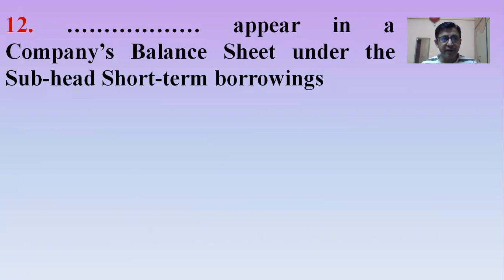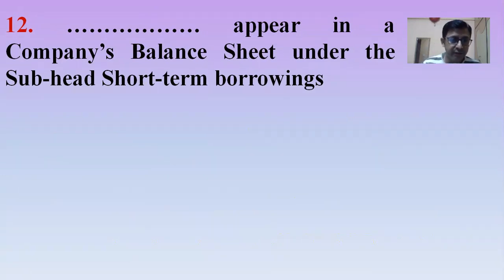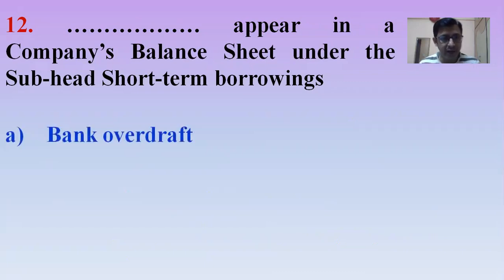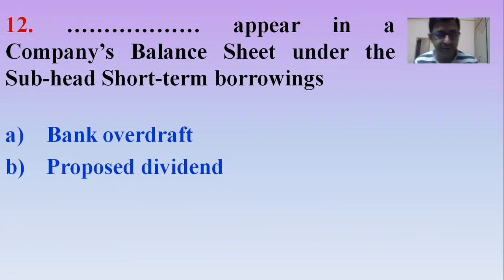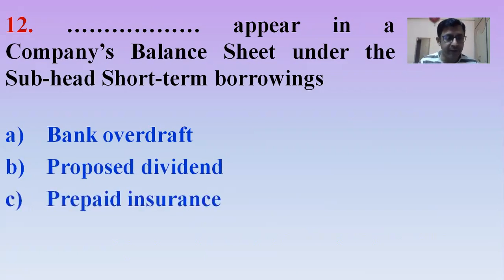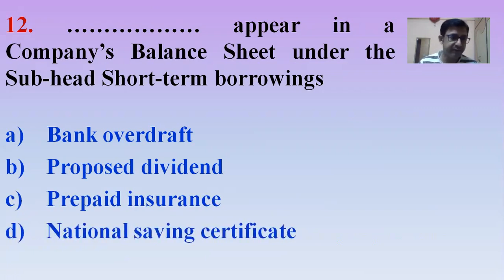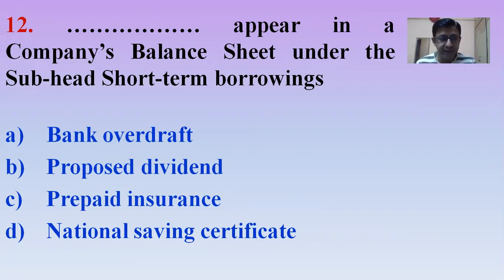Next MCQ: Which item appears in a company's balance sheet under the subhead called Short-term borrowings? Options: Bank overdraft, Proposed dividend, Prepaid expense or Prepaid insurance, or National savings certificate. The right answer is Bank overdraft — it appears under the head called Short-term borrowings. That was the last MCQ. I hope you enjoyed this video. Thank you.